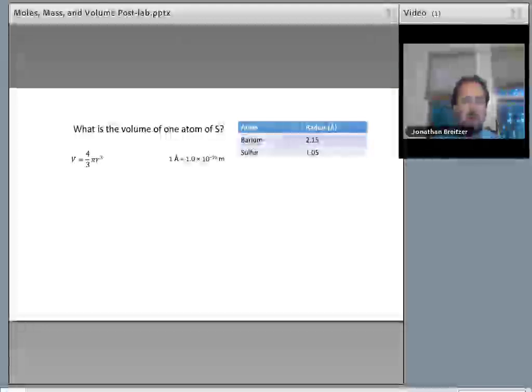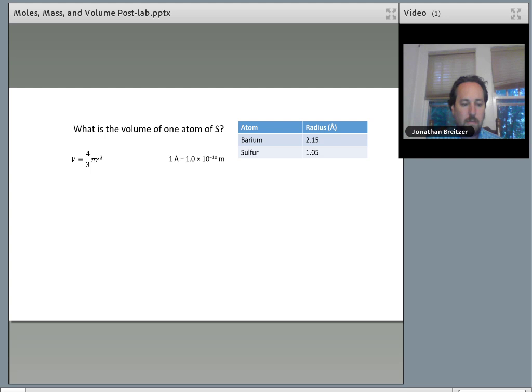We simply use this formula here. Put in the radius, in this case for sulfur, cubed, multiplied by pi, and then multiply by four-thirds. This is rounded to three significant figures because the radius given has three significant figures.